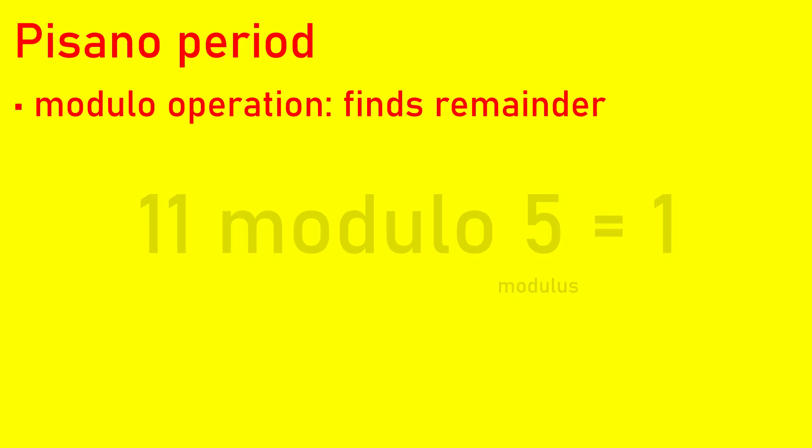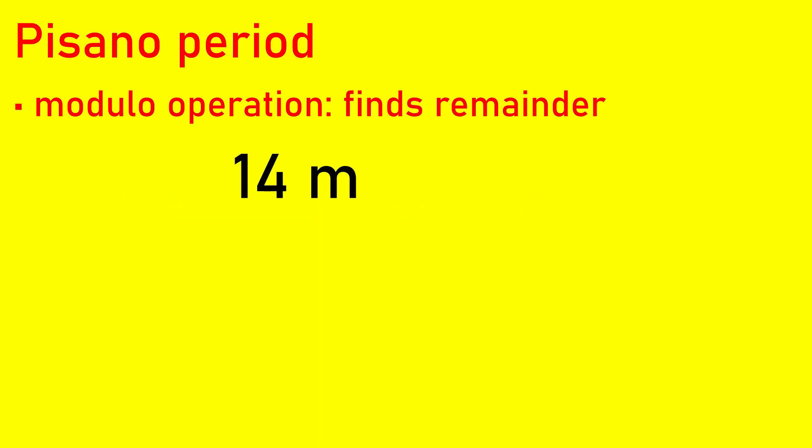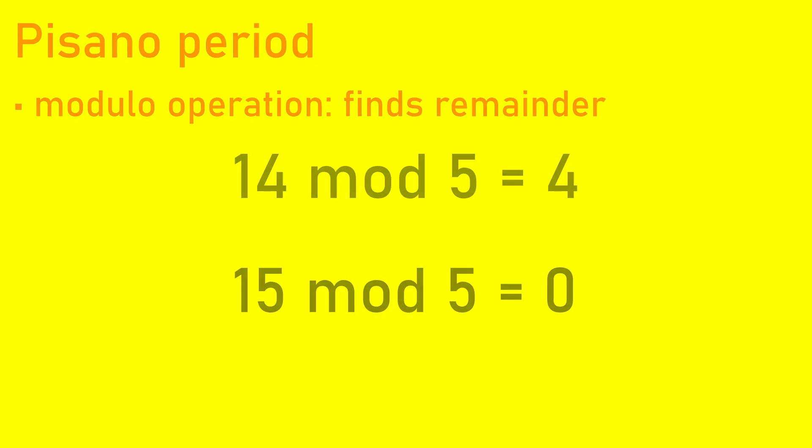Keeping this in mind, we can evaluate something like fourteen modulo three. We subtract three as much as we can from fourteen, and when we're done, we have two left over. So fourteen mod three is equal to two. If we try to evaluate fourteen mod five, we can subtract two fives from fourteen and get a remainder of four. But if we evaluate fifteen mod five, we can subtract three fives and get a remainder of zero.